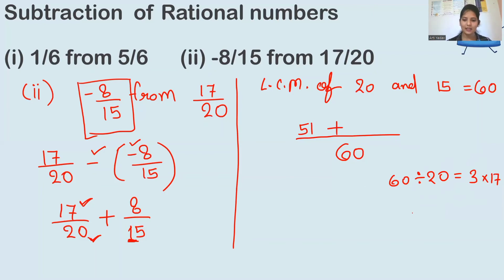Plus again, 60 divided by this next denominator 15 is 4. And then 4 into 8, this numerator. So 4 into 8 is 32.